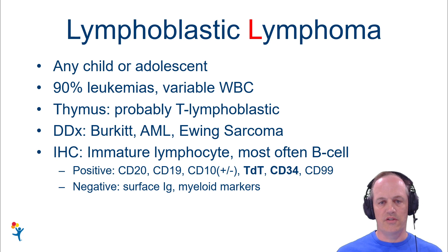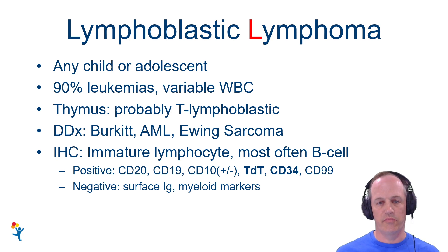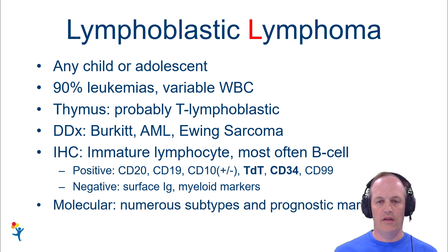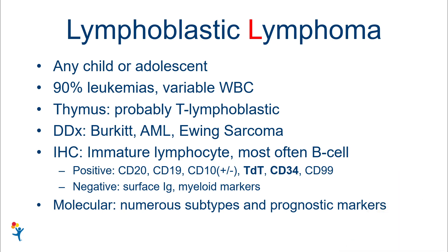To differentiate lymphoblastic lymphoma from other lymphomas: if it's B cell, it's going to be negative for T cell markers; if it's T cell, it's going to be negative for B cell markers. The lymphoblastic lymphomas are both going to be negative for surface immunoglobulins, which is going to help you distinguish them from Burkitt, as well as distinguishing from myeloid/AML because they're going to be negative for myeloid markers. There are a lot of molecular subtypes and prognostic categories, which is a long and evolving list.